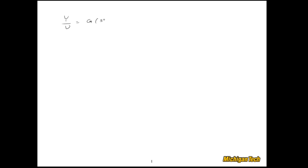Let's say you have a transfer function that looks like this — some output over input — and it is 3 over s squared plus 2s plus 10. That's a beautiful-looking transfer function, second-order, because the denominator is second-order in s, and there are no zeros. And that's really the kind of system that we're going to focus on: second-order systems with no zeros.